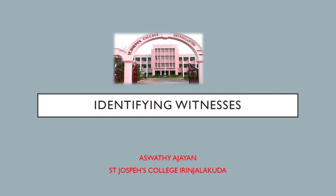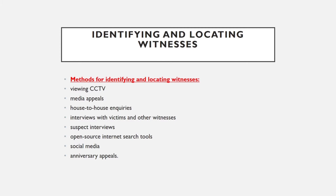Some witnesses may self-present or be self-evident, whereas other witnesses may be more difficult to identify and locate. The investigator must develop clear, intelligence-led objectives for identifying witnesses. Some methods for identifying and locating witnesses include viewing CCTV — CCTV coverage is now available in all areas. By entering the crime scene, the investigating officer can check CCTV to identify the suspect or victim. Other methods include media appeals, house-to-house enquiries, interviews with victims, suspect interviews, open-source internet search tools, social media, and anniversary appeals.